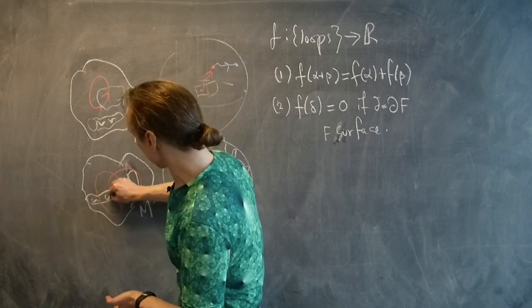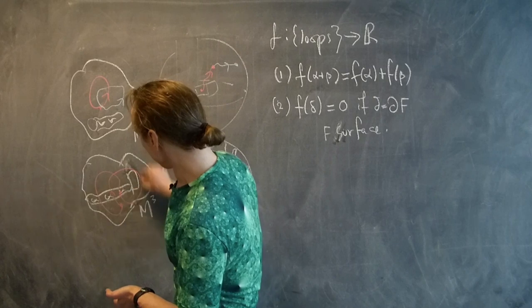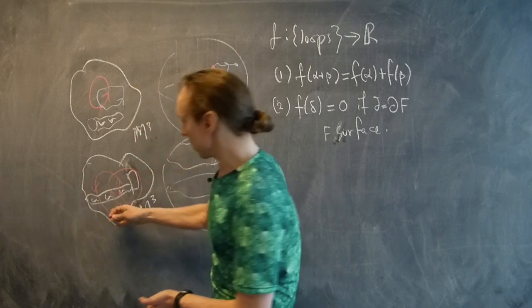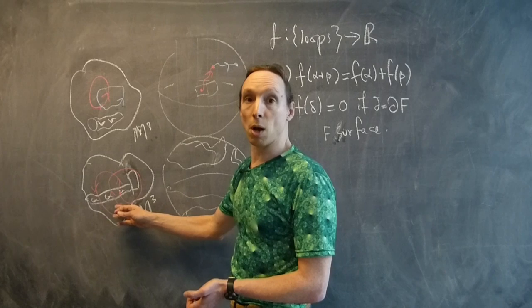notice that it went through the surface positive once, positive again, and then negative once. So this loop would be evaluated to plus one.